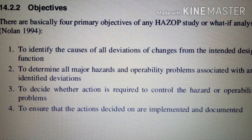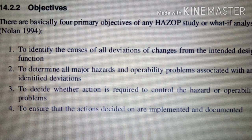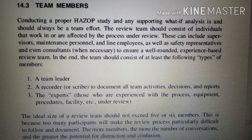The objective is accident prediction and the end result is accident prevention. There are four primary objectives of a HAZOP study or What-If Analysis (Nolan, 1994): first, to identify the causes of all deviations or changes from the intended design function; second, to determine all major hazards and operability problems associated with any identified deviations; third, to decide whether action is required to control the hazard or operability problems; and fourth, to ensure that actions decided upon are implemented or documented.